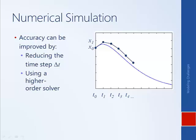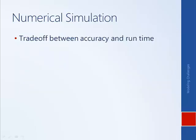Consider whether there are drawbacks to these approaches. In general, the trade-off of using smaller time steps or higher-order solvers to get improved accuracy is that the simulation will take longer to run. If it takes one hour to simulate one second of time, it's not very useful — you wouldn't be able to run many simulations or get much data. So improving accuracy comes at the expense of making the simulation take longer to run.